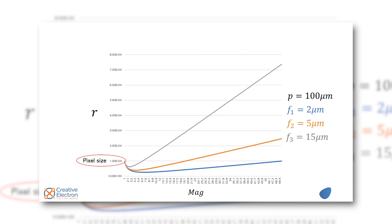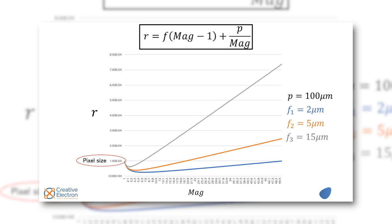Let's play a little bit more with the numbers so you can see different equations and different impacts. This is a situation where we have a detector with 100 micron pixels and three different sources: two micron spot size, five micron spot size, and 15 micron spot size. And you can see the drastic difference, so this is 15, this is five, and this is two microns.